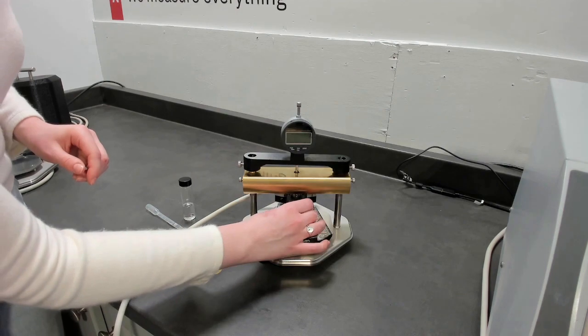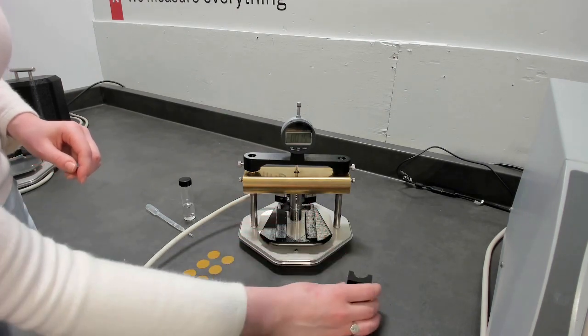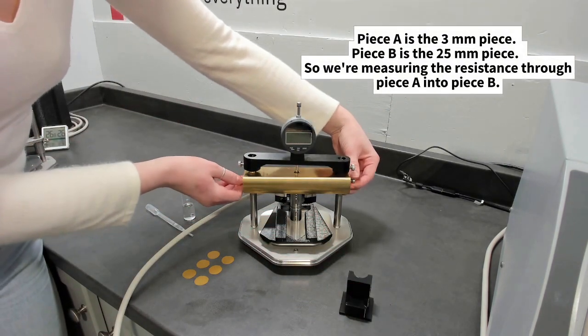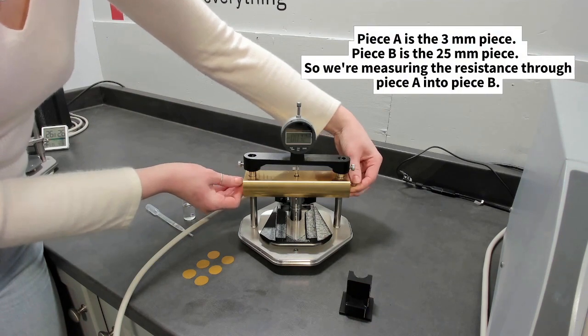These are 21 millimeter diameter pieces. Piece A is 3 millimeters thick and piece B is 25 millimeters thick. We're measuring through piece A and into piece B.